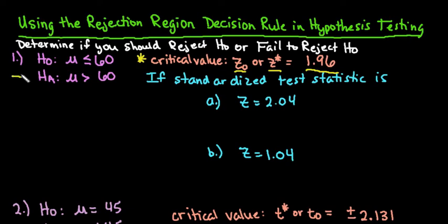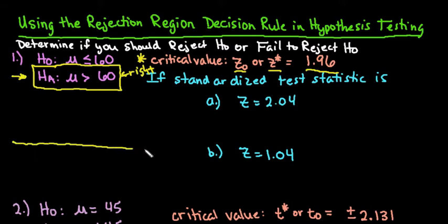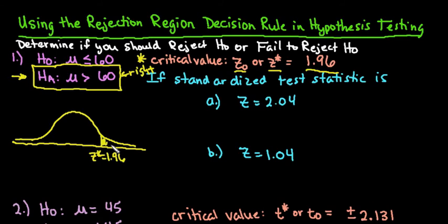For the first example, we have a critical value of Z-naught or Z* of 1.96. Critical values are based on alpha levels. The alternative hypothesis always determines the tail of the test. Since this one is greater than, it's going to be a right tail test. We draw a normal curve, and our rejection region starts at Z = 1.96. We always go to the right whenever the alternative hypothesis is greater than.